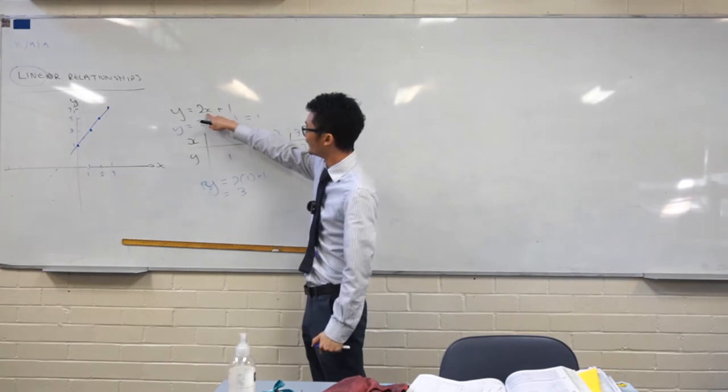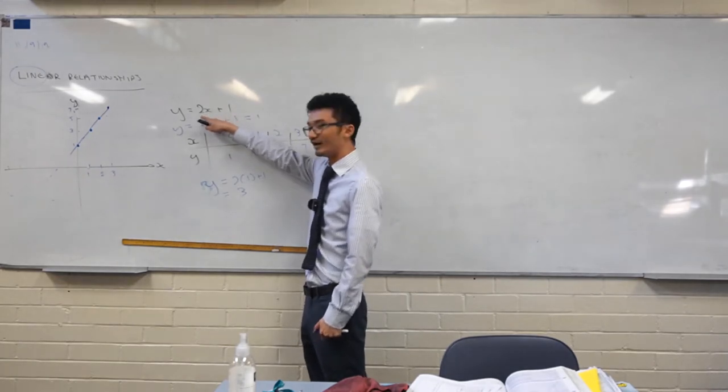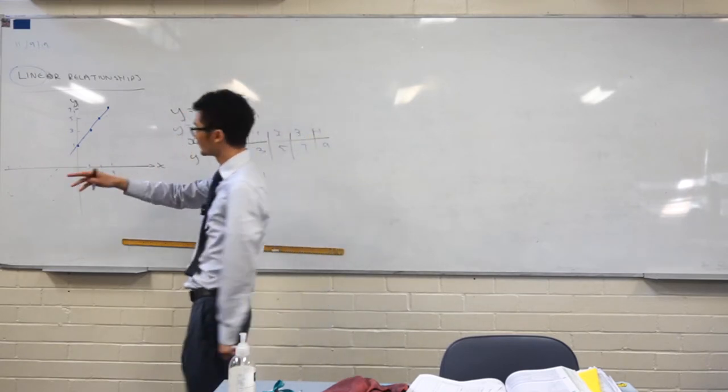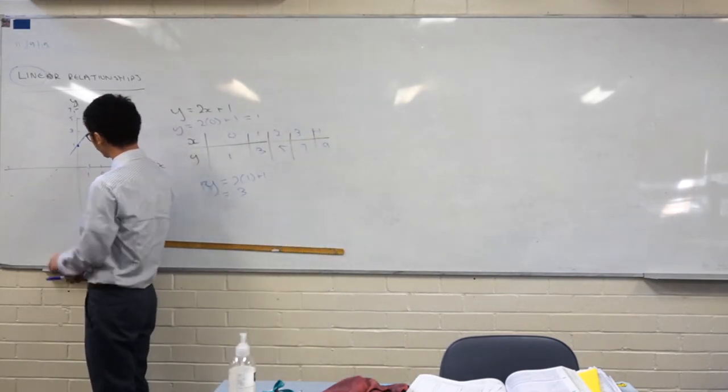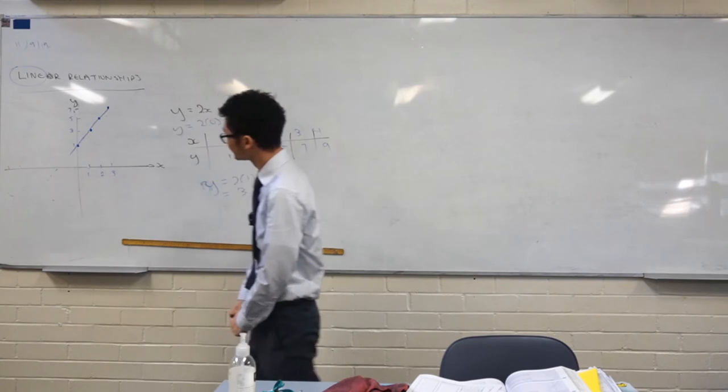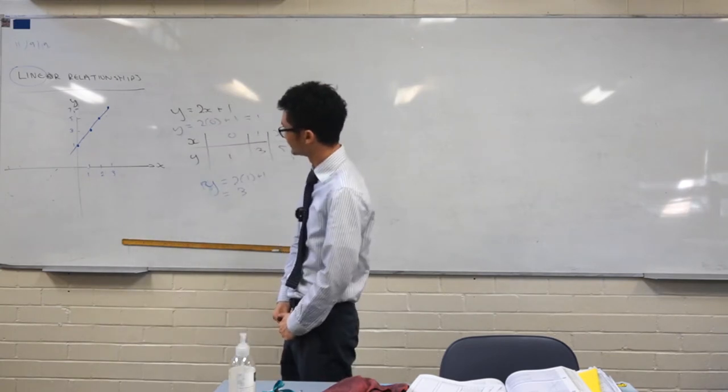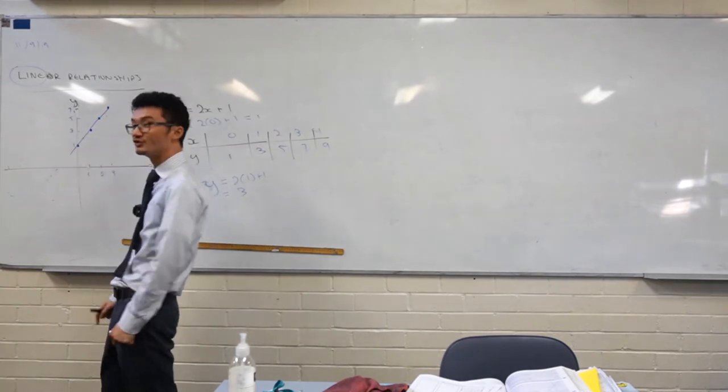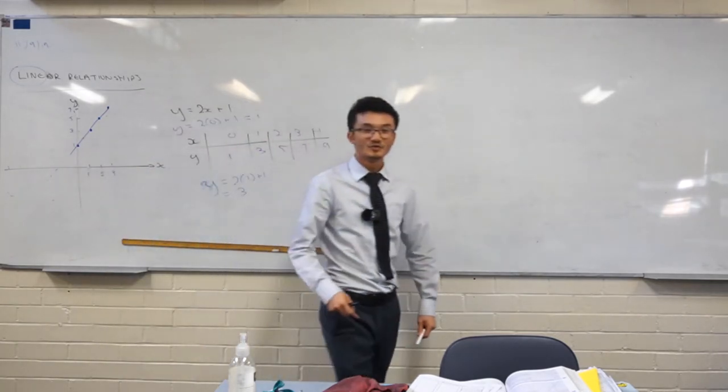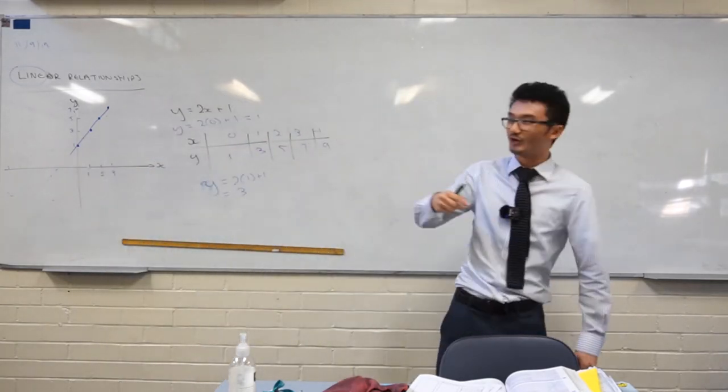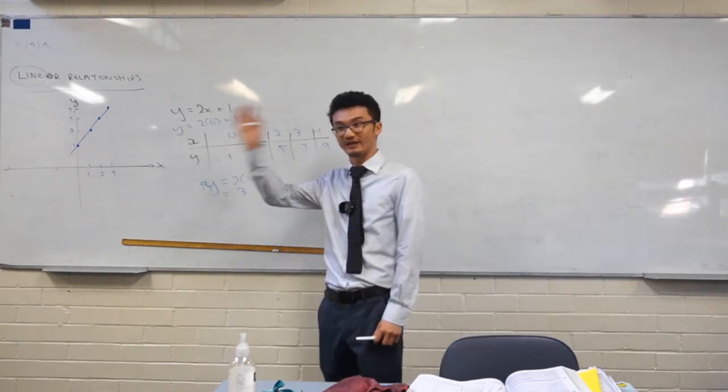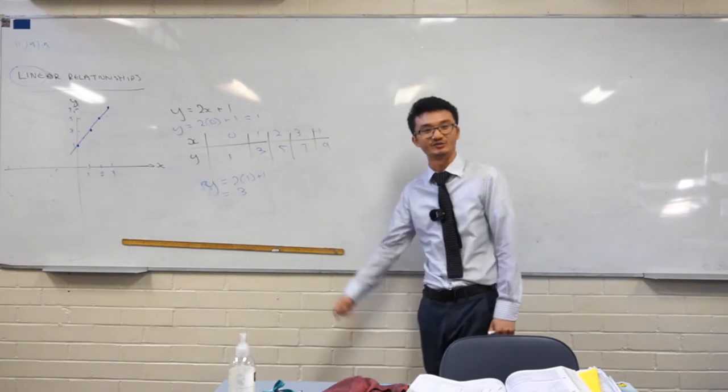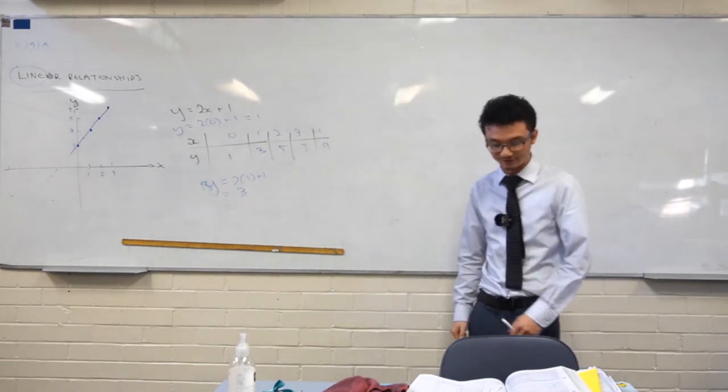So if you put in 0.5 here, well, 0.5 times 2, that's just 1, plus 1 is just 2. So you can actually plot that point too if you wanted to. But in general, we only need a few of these points before we're confident, what is this line going to look like? That's what this is talking about. That's what a linear relationship is. And we plot them out and we get some lines.